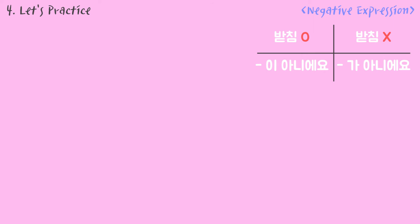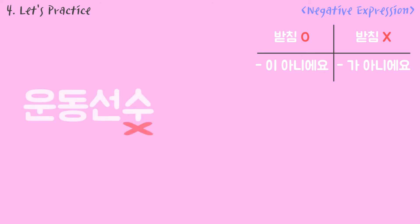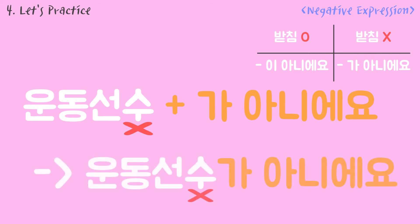If the noun is 운동선수, there is no 받침. It is 가 아니에요. So it becomes 운동선수가 아니에요.